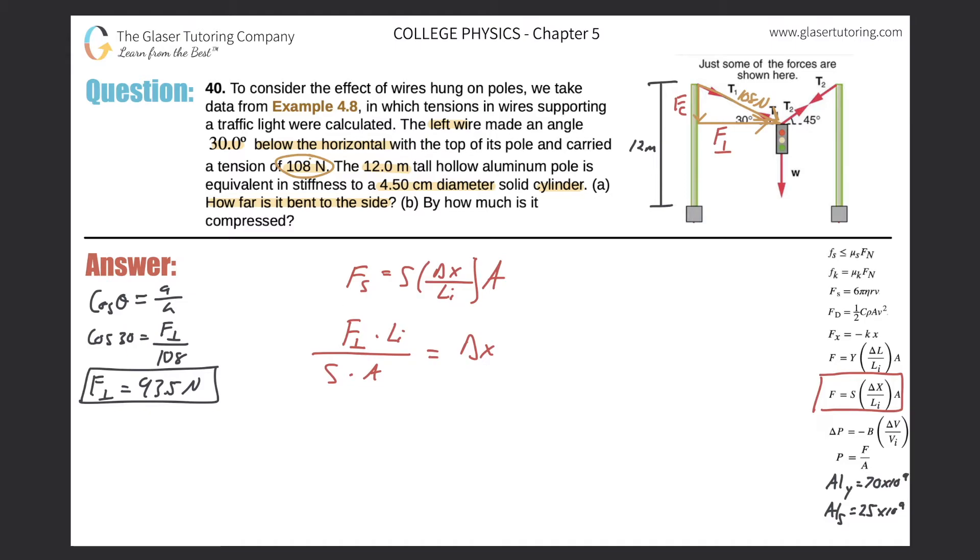What's the initial length? They told us the pole is initially 12 meters tall. So we took care of that. Next, the shear modulus. We would look this up in the table. I just wrote down the two values on the bottom right-hand side. So the shear modulus of aluminum was 25 times 10 to the 9.